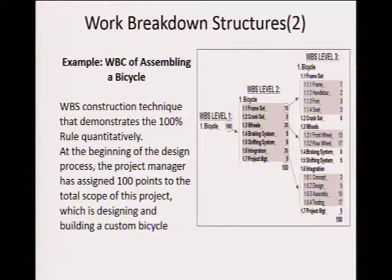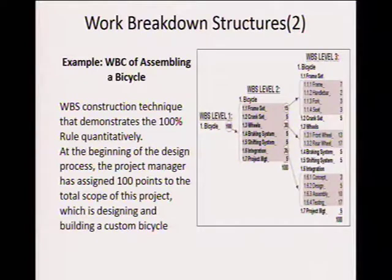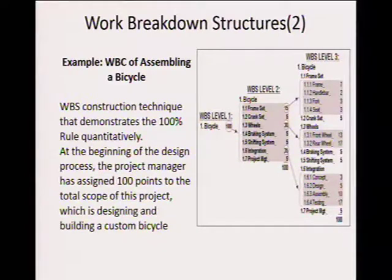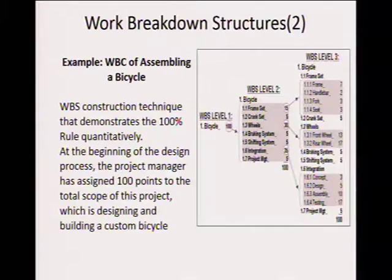The work breakdown structure in construction is a technique that demonstrates the 100% rule qualitatively. At the beginning of design, the project manager is assigned 100 points to the total scope of the project — for example, designing and building a custom bicycle — and then each activity and what is to be done is defined. In project management, all the information that you need or what needs to be done must be correctly and consciously put together. There is nothing like an afterthought.